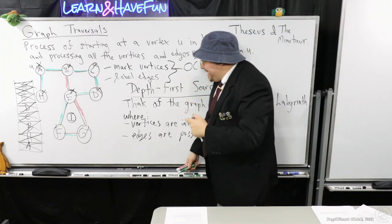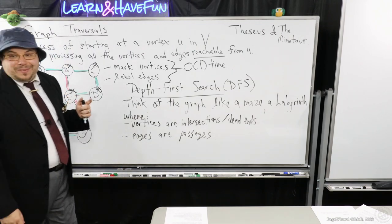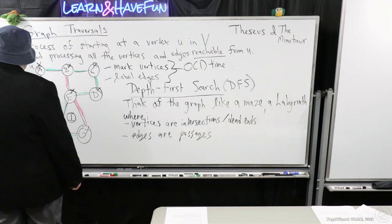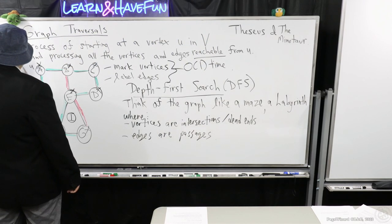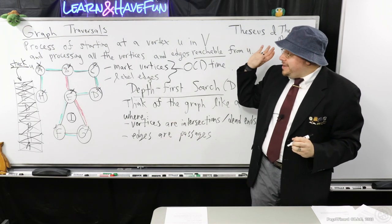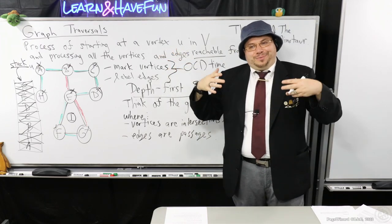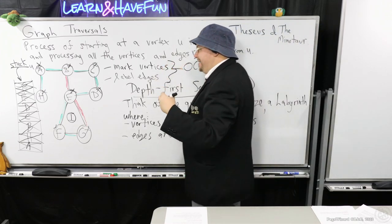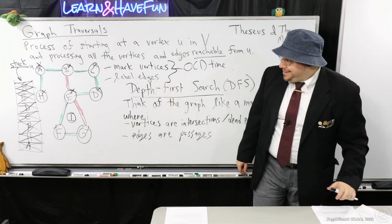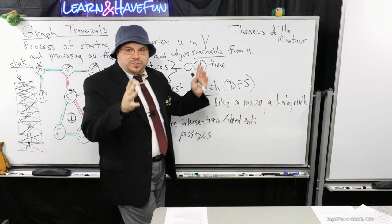Anyone figured out what data structure is going on with this representation of my string? It's actually a stack. In data structures, you'd call this a stack. This mechanism is naturally facilitated as a recursive algorithm, where the stack is built right into your system. You could also just use your own explicit stack.